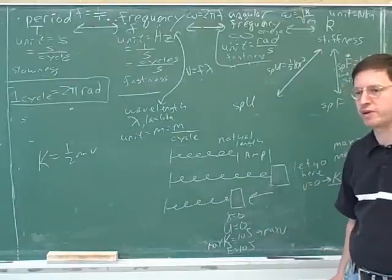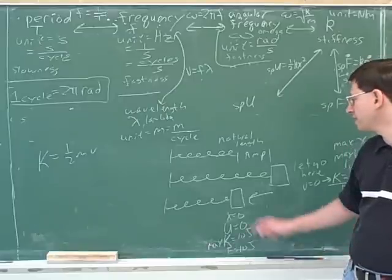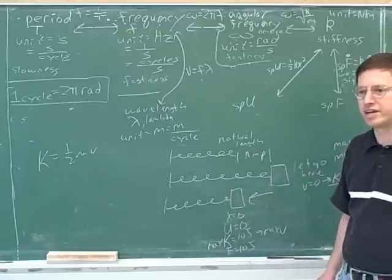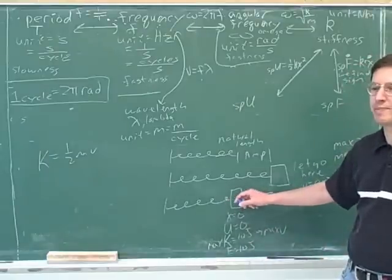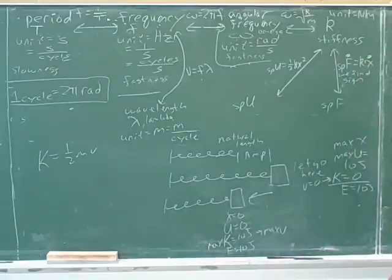The natural length is when we're going as quickly as possible. Why are we going so fast if we're at the natural length? Our inertia is carrying us through there. Even though the spring would be perfectly happy to stay at the natural length, because it was already going so fast, its inertia carries it straight through the natural length.